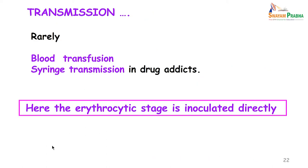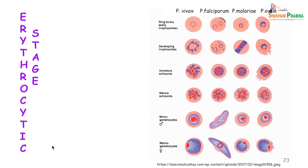Remember, the mosquito transmits sporozoites. But in the case of blood transfusion and syringe transfusion, it is the erythrocytic stage which is inoculated directly into these patients. So these patients miss the cycle which occurs in the liver.